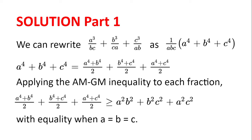Now, applying the AM-GM inequality to each fraction, we have: A to the power of 4 plus B to the power of 4 divided by 2 is greater than or equal to the square root of A to the power of 4 times B to the power of 4, so A squared B squared, with equality when A to the power of 4 equals B to the power of 4, so A equals B. Similarly for all the other fractions. So in the end, A⁴+B⁴ over 2 plus B⁴+C⁴ over 2 plus A⁴+C⁴ over 2 is greater than or equal to A²B² plus B²C² plus A²C², with equality when A equals B equals C.